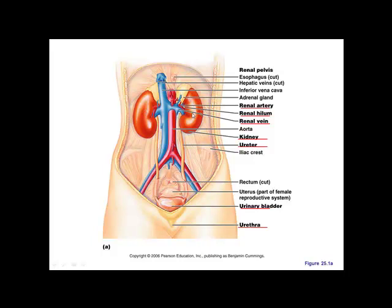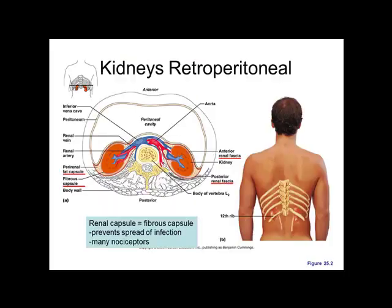Your right kidney sits slightly lower than the left kidney. The left kidney is completely protected by the 12th rib; the right kidney sits slightly below the 12th rib. The way I remember it: if you kidney-punch somebody on the left side they're protected, but on the right side it's going to hurt — they're going to pee blood.